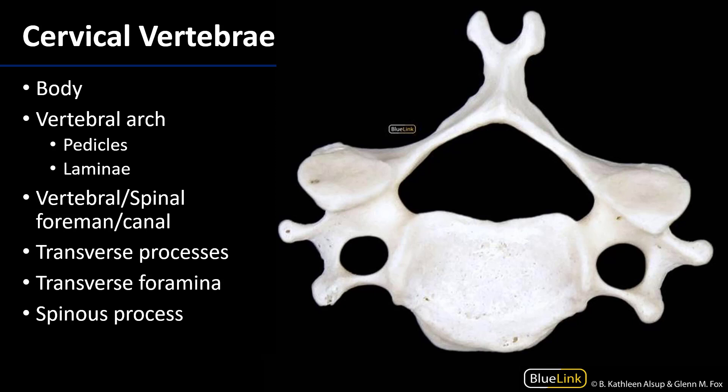Moving on to the vertebral column and its vertebrae, there are three types: cervical, thoracic, and lumbar. Cervical vertebrae make up the c-spine and there are seven of them. They are readily identifiable because they are the only vertebrae that contain transverse foramina — it is through these transverse foramina that the vertebral arteries and veins run. They're called transverse foramina because they pierce through the transverse process of the vertebrae.